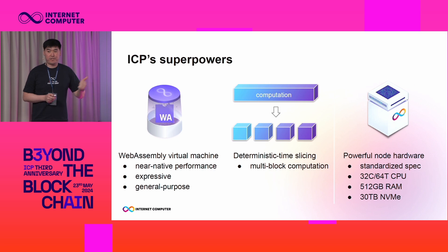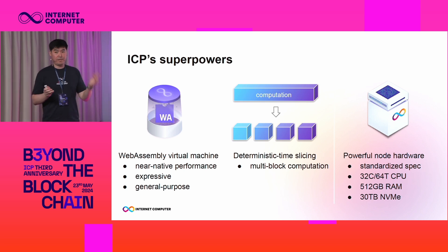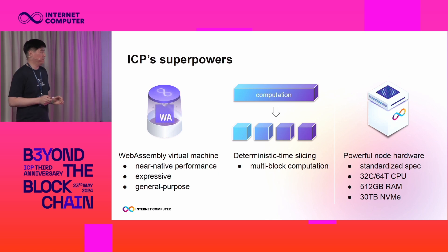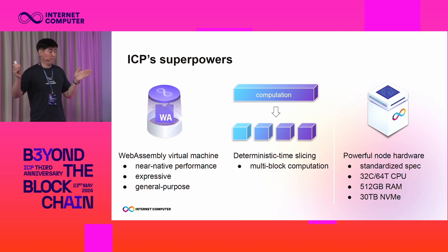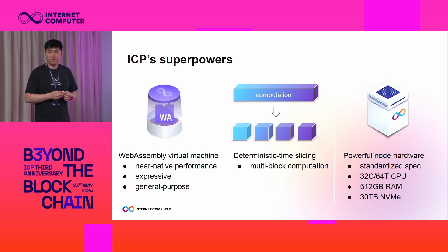First, virtual machine — ICP uses a very powerful virtual machine, WebAssembly. It offers near-native performance, it's also expressive and general purpose, so you can express almost any program. Many languages compile to WebAssembly, so having WebAssembly is great for supporting AI and other use cases. There's also a feature that allows ICP to take long-running computation and run it across multiple blocks by slicing it — we call it deterministic time slicing. AI computations are long running, so it's very useful. As far as I know, ICP is the only blockchain that has this feature.